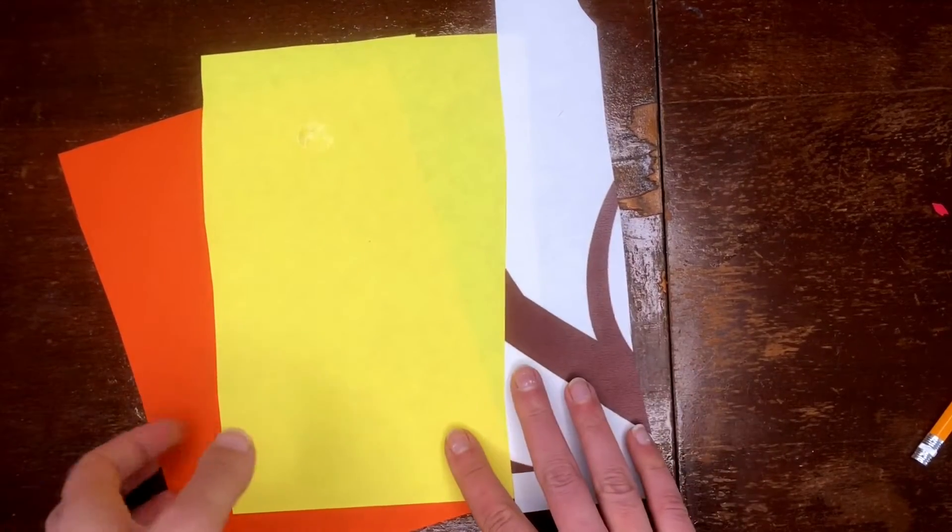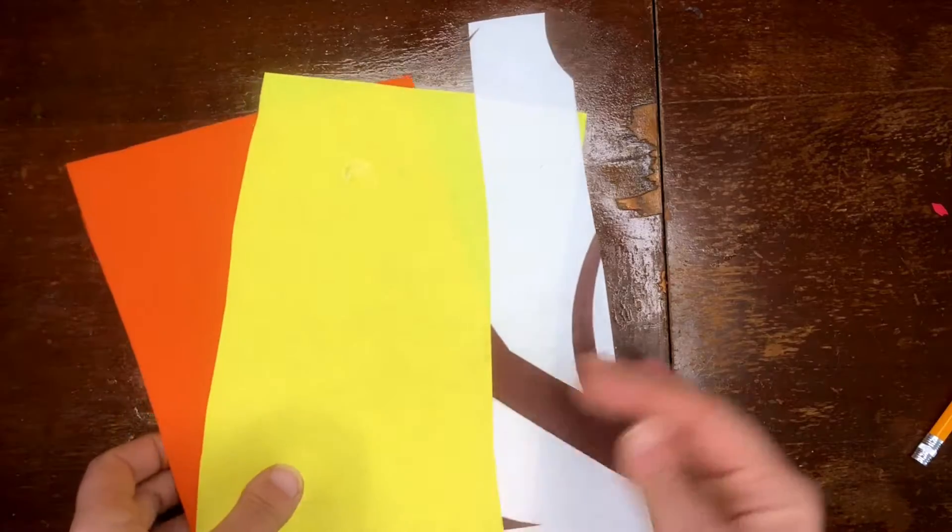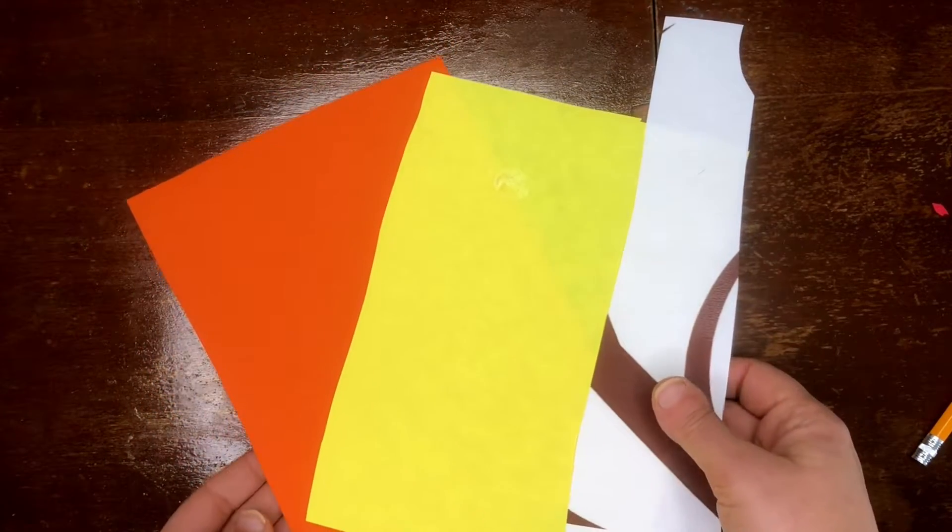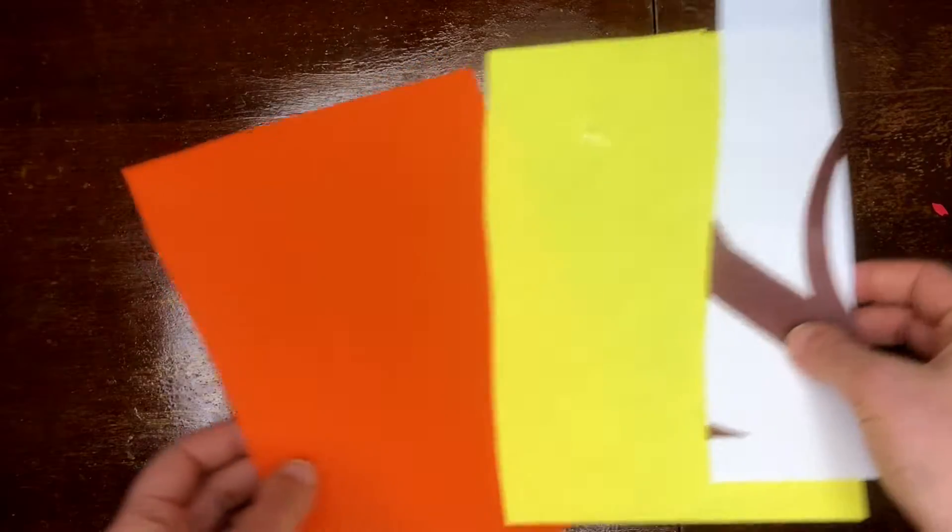For our lion craft, we're just gonna need some orange, yellow, white, a little bit of black or brown. Now, if you don't have these colors, remember you can always take a piece of white paper, color it in with a marker, and then cut out our shapes.